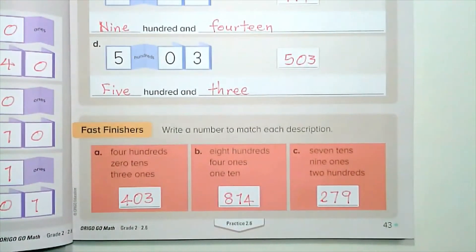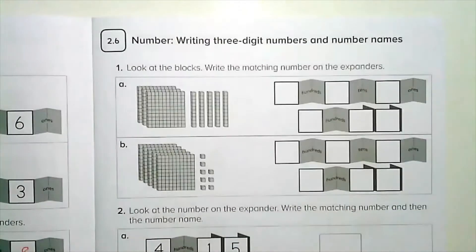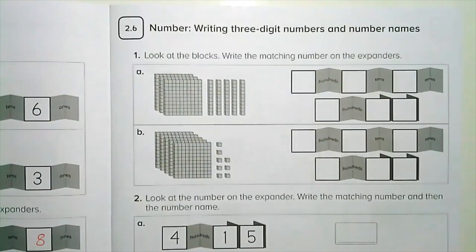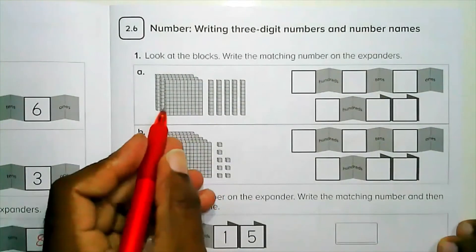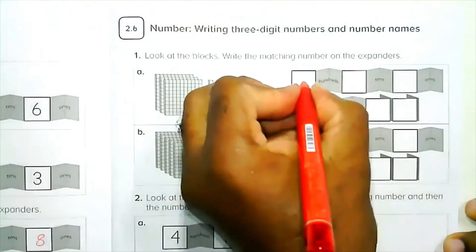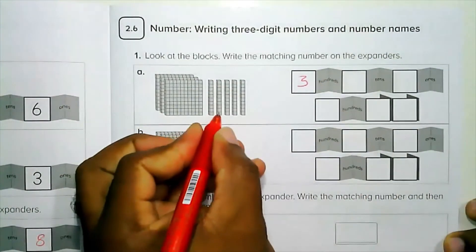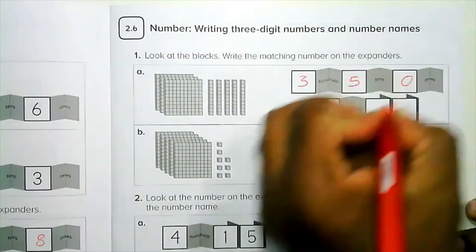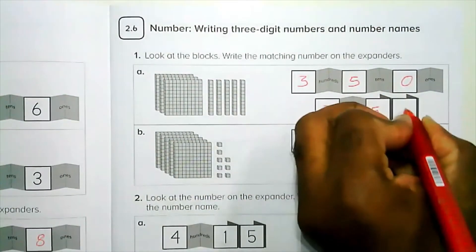Now let's go to practice 2.6. Number one: look at the blocks and write the matching number on the expander. We have three hundreds, five tens, zero ones — so we write three hundred and fifty.